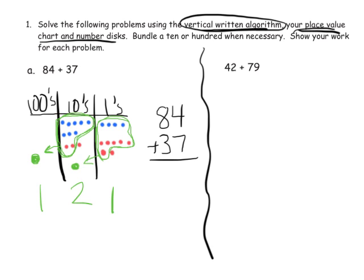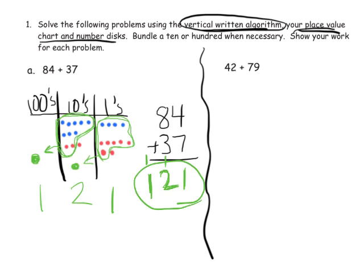Let's connect that with the standard algorithm over here. In the 1s column, 4 plus 7 is 11 — that's more than 10, so we can bundle 10 ones together. That cashes in to equal a 10, so we have 1 left over and carry 1. Now we have 8 tens plus 3 tens plus the new 10 — that's 12 tens. We bundle 10 together into the 100s column, leaving 2 in the 10s column, and 1 in the 100s column. Our answer is 121.